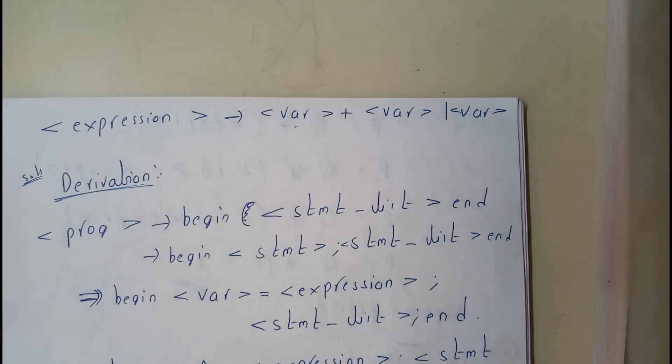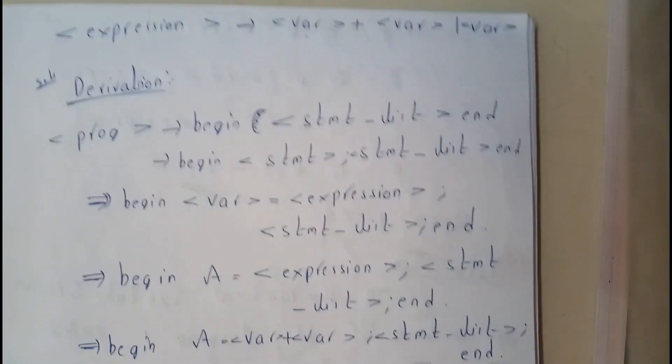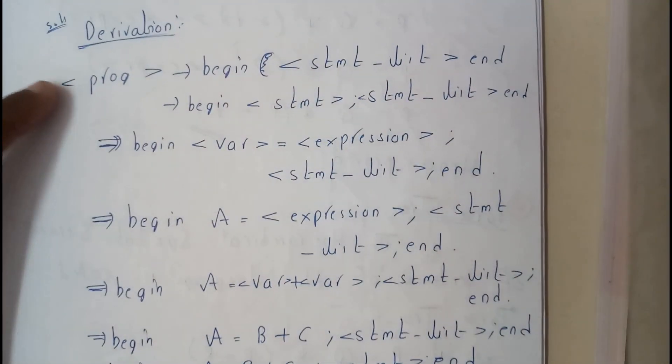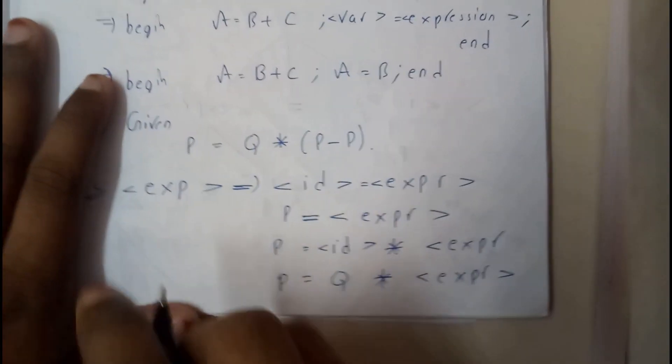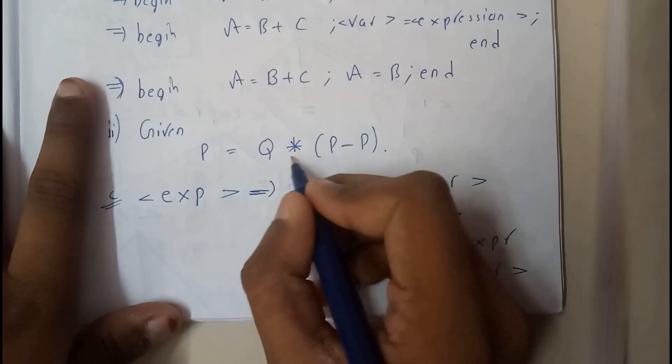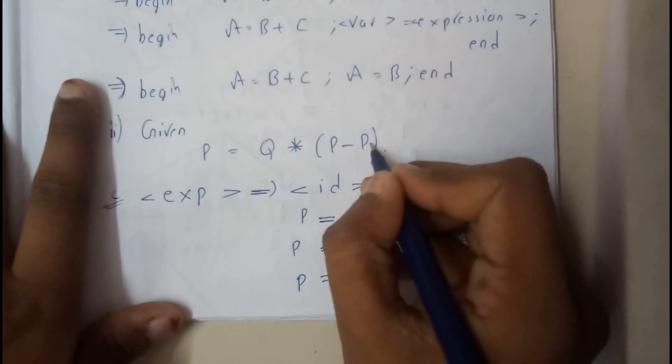I hope everyone got an idea on this. Let's go through another example that will make it clear. Let's assume we want to write P = Q × (P - R).